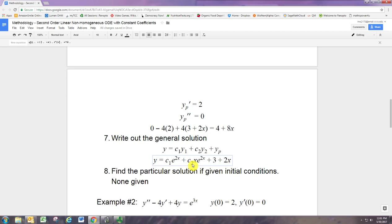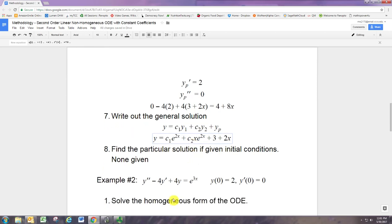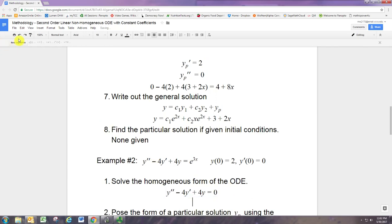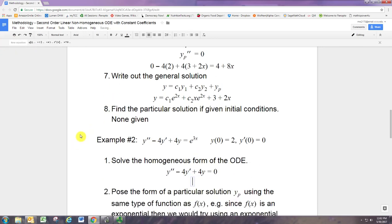So let's go through the next example. As before, we need to solve the homogeneous form. So we take the differential equation and replace the right-hand side with 0. We're going to take the shortcut to get to the characteristic equation. We know that it's gamma squared minus 4 gamma plus 4 equals 0.